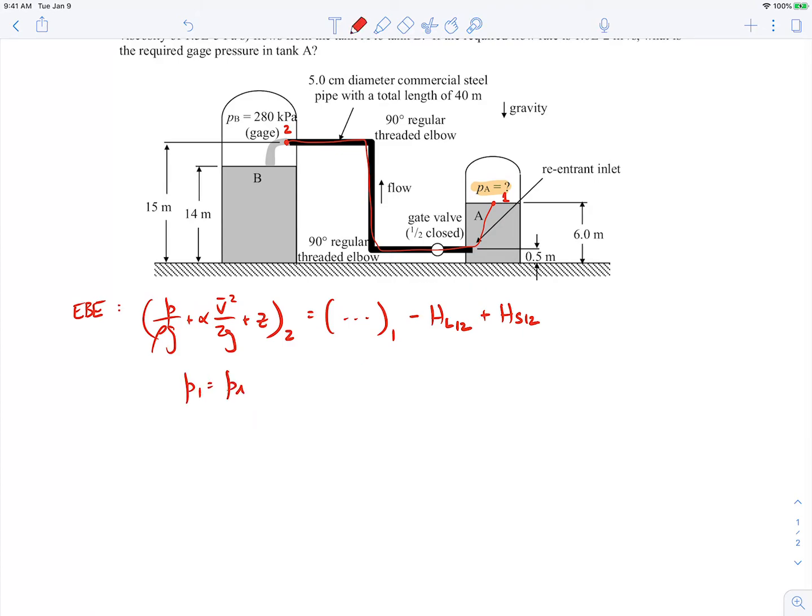We know P1 is equal to PA. That's what we're trying to find. So I'll put a question mark there. P2 will be equal to PB. That's given. That's the 280 kilopascals gauge. And then V1 will be equal to about zero because it's the surface of a large tank. It's moving down very slowly, but the kinetic energy there is negligible. So we'll say it's about equal to zero. V2 will just be the same velocity as in the pipe. We'll call it V bar, and that in fact is given. That's just going to be the volumetric flow rate divided by the cross-sectional area of the pipe. Cross-sectional area of the pipe will be pi d squared over four. So we can plug in the numbers for that. If you do that, it'll just come out to be 5.1 meters per second when you plug in the numbers for that.